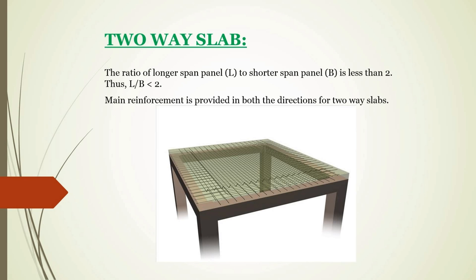The next is the two-way slab. The two-way slab is designed when the ratio of longer span to shorter span is equal to or less than 2 — that is, L divided by B less than or equal to 2. The main reinforcement is provided in both directions in two-way slabs, so the loads are transferred in both directions.